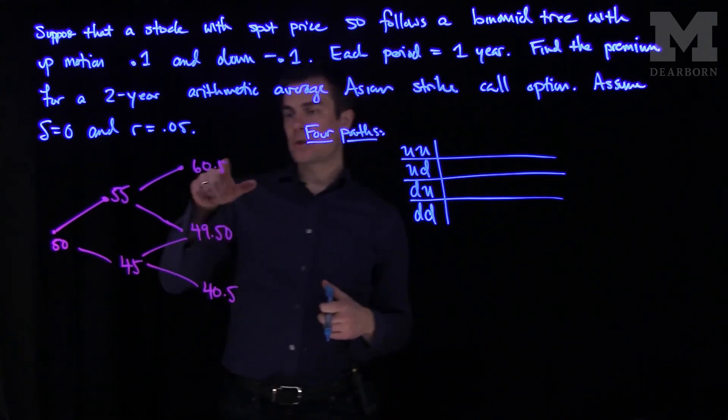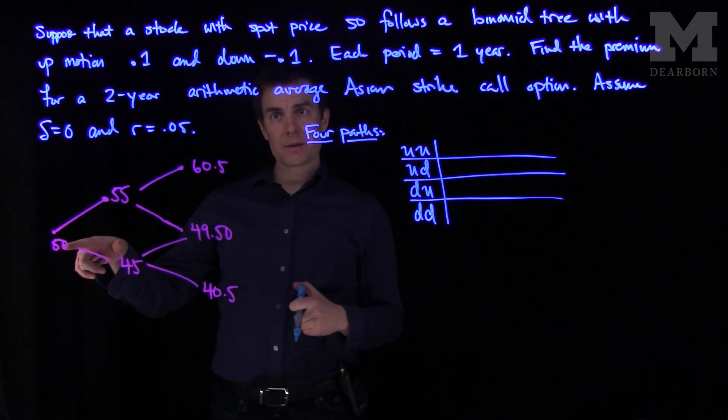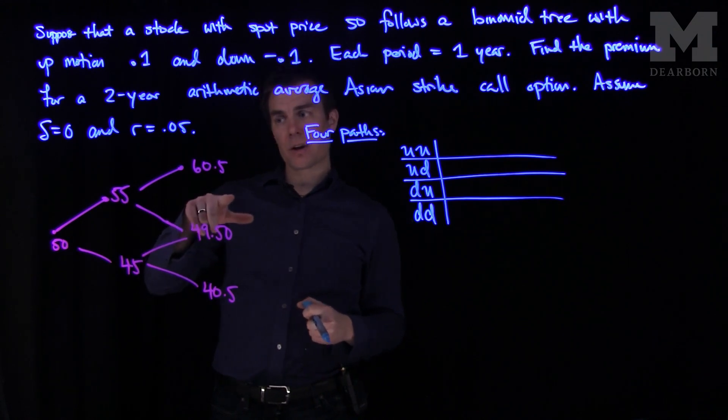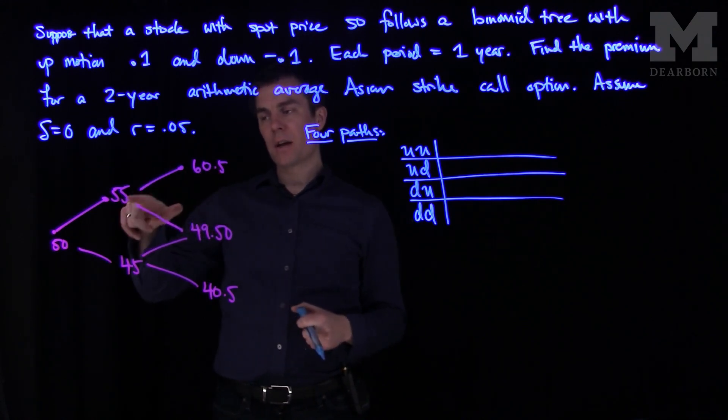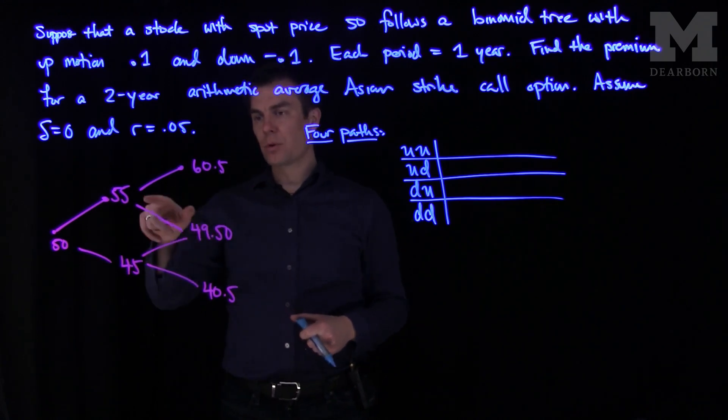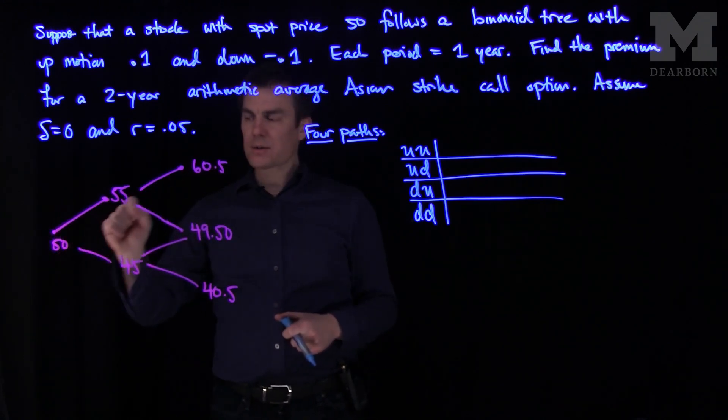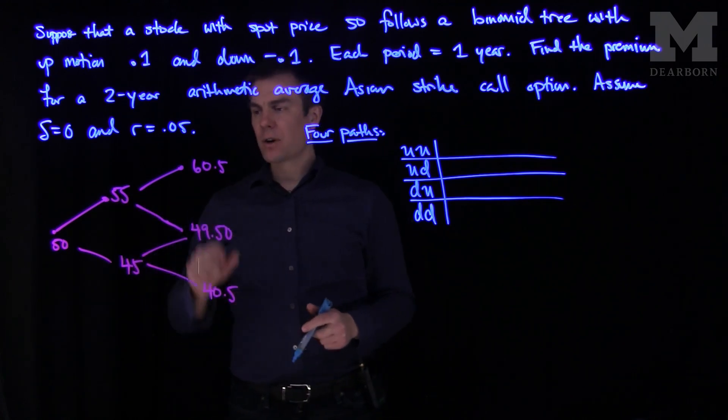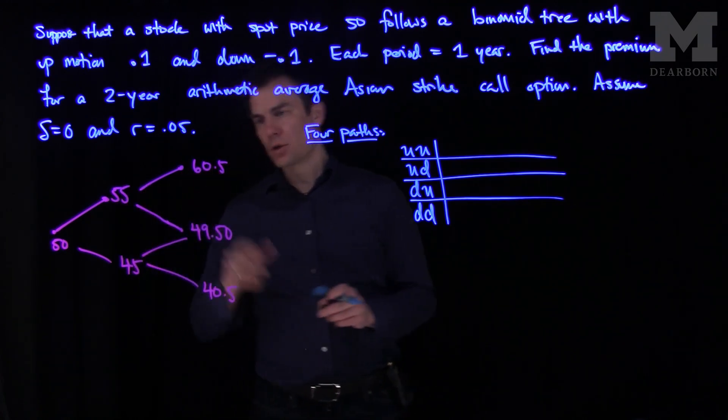And so what we can do is we can figure out what the average strike is going to be. Now there are two methods to do this. One method just says do not include the initial price. And the other method, which is more common on the actuarial exams, is to look at everything on the path except for the initial price. So in this example we will not include the initial price. We'll just look at the average of the two previous.